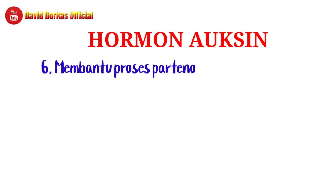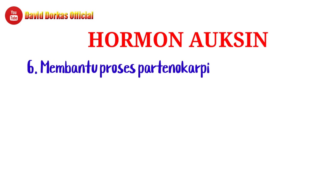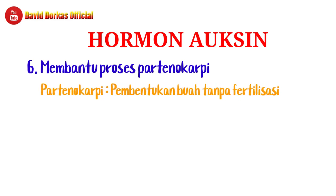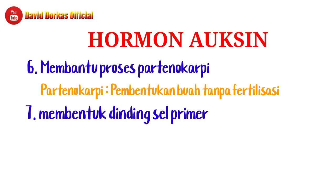Fungsi nomor enam adalah membantu proses partenokarpi. Partenokarpi adalah proses pembentukan buah tanpa fertilisasi atau tanpa pembuahan, sehingga hasilnya adalah buah tanpa biji. Contohnya adalah stroberi. Proses partenokarpi melalui hormon auksin ini dilakukan secara sintetik atau buatan, bukan alami.